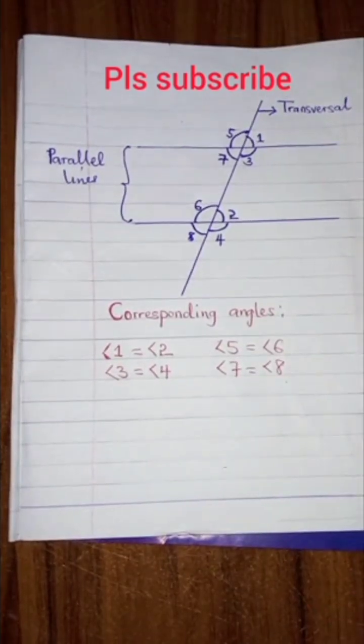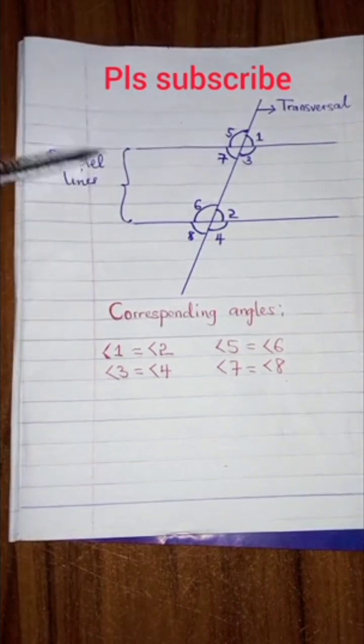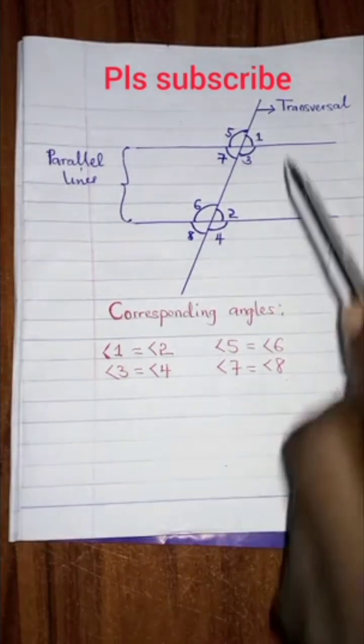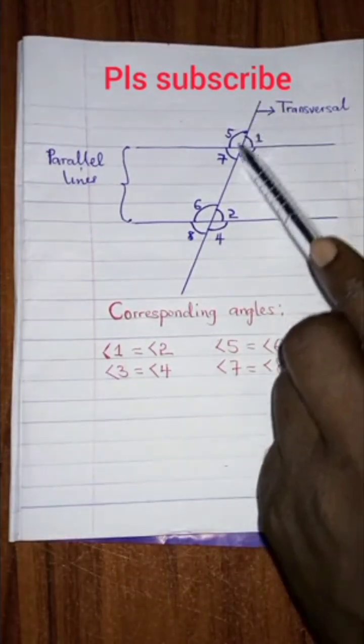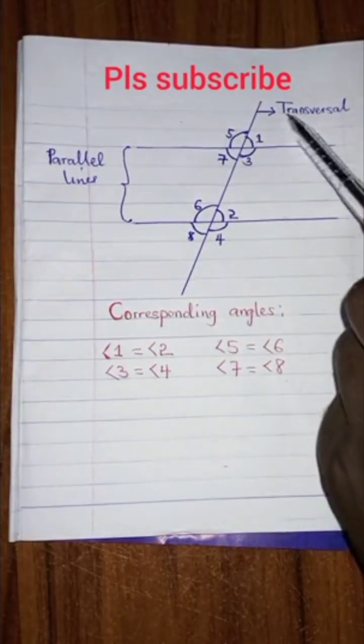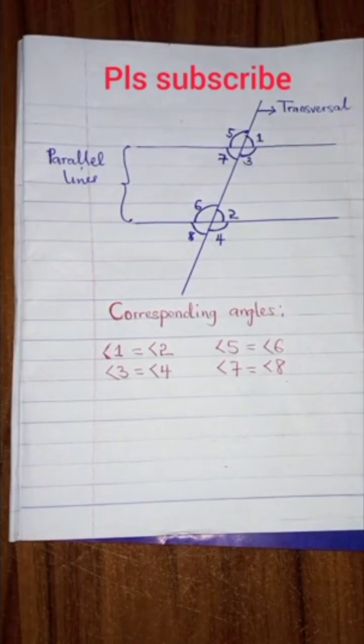And also the two lines that cuts across can be referred to as the parallel lines, and the line that cuts a pair of parallel lines is known as transversal.